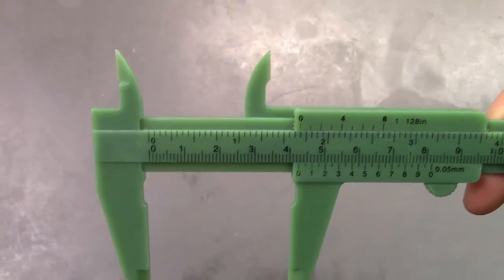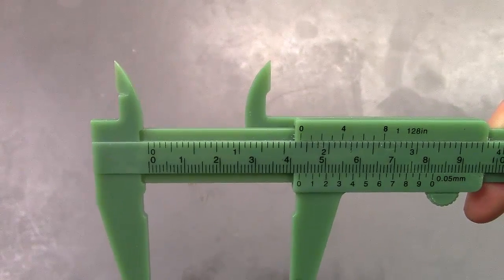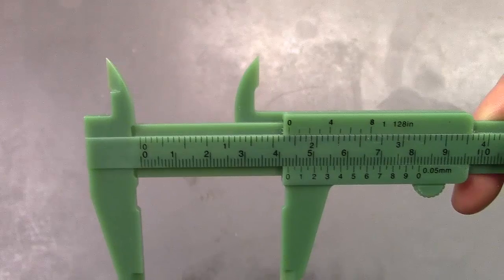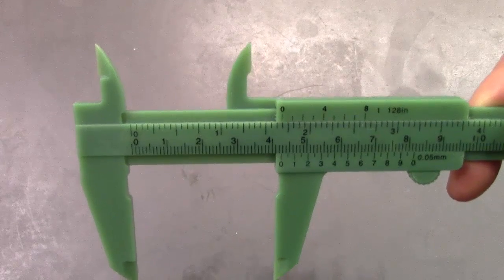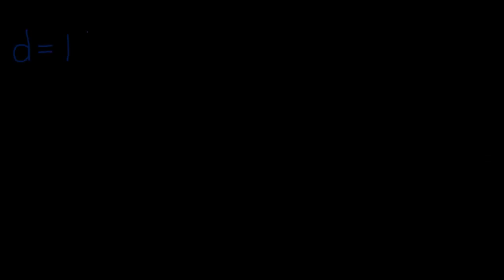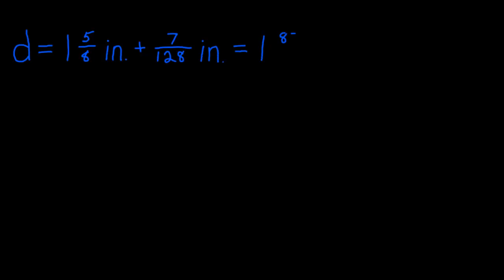The main scale on the calipers reads 1 and 5 eighths inches while the vernier scale reads 7/128th inch. Thus, the diameter of the golf ball is 1 and 5 eighths inches plus 7/128th inch, which equals 1 and 87/128th inches, or about 1.68 inches.